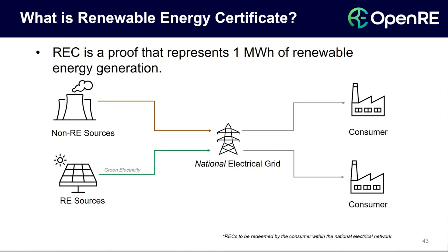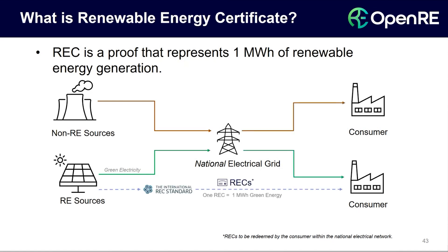For RECs, there is a number — or volume — of RECs. One very important point to note is that one REC represents one megawatt hour. So if you have a one megawatt peak solar panel running for one hour, or maybe a 500 kilowatt panel running for two hours, then you'll generate one REC.